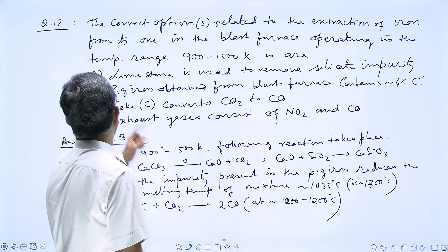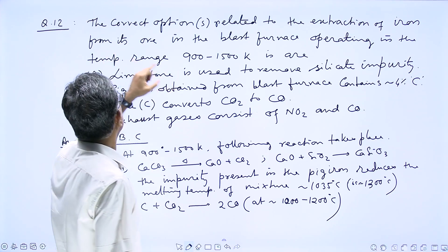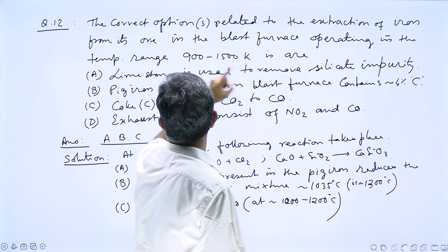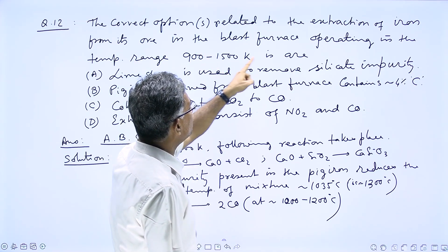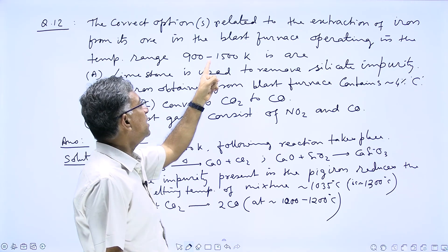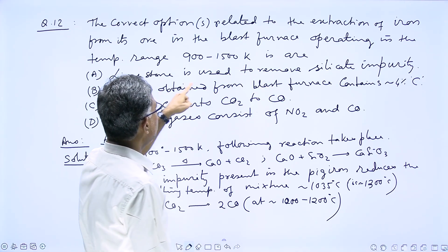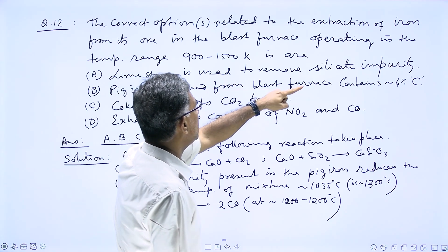Question number 12, Paper 2. The correct option related to the extraction of iron from its ore in the blast furnace operating in the temperature range 900 to 1500 Kelvin. Options are given - limestone is used to remove silicate impurity.